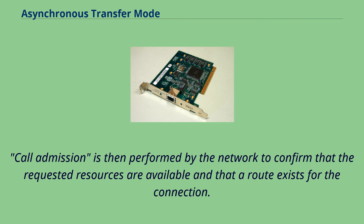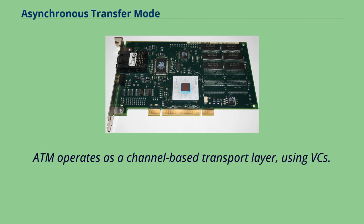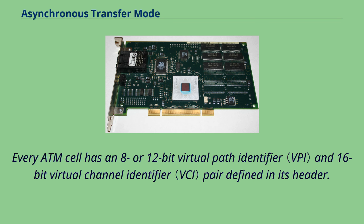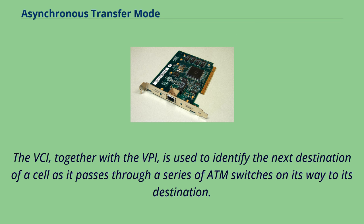ATM operates as a channel-based transport layer using virtual circuits, encompassed in the concept of virtual paths and virtual channels. Every ATM cell has an 8- or 12-bit virtual path identifier (VPI) and a 16-bit virtual channel identifier (VCI) pair defined in its header. The VCI, together with the VPI, is used to identify the next destination of a cell as it passes through a series of ATM switches on its way to its destination.